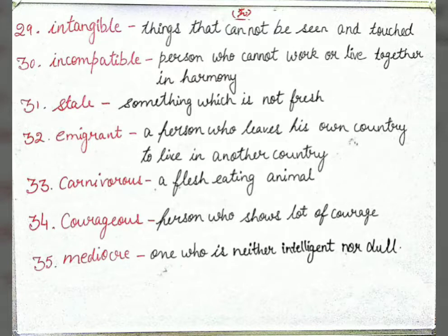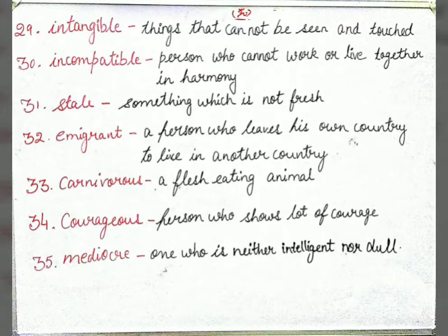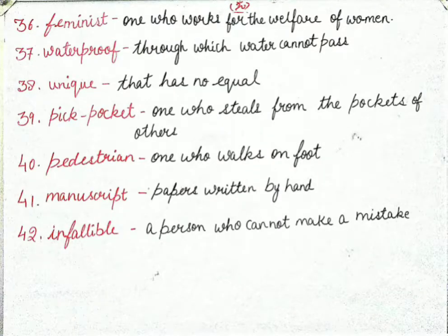Next is 'courageous' — a person who shows a lot of courage. Jo insaan kaafi bahadur ho, kaafi courage dikhaye use courageous kehte hain. Next is 'mediocre' — one who is neither intelligent nor dull. Na intelligent na dull, beech ka ho use mediocre kehte hain. Next is 'feminist' — one who works for the welfare of women.